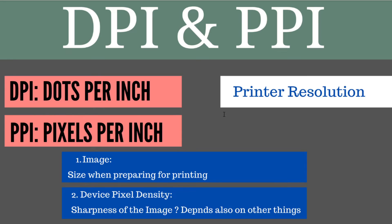In the next slide I will show you why this confusion exists, but first let's understand the two terms. Dots per inch, or DPI, are ink dots per inch that a printer can put on paper when printing an image — so this is printer resolution. When we use PPI for an image, it represents the size when preparing an image for printing, and this PPI becomes important. When we use PPI for a device, it represents the pixel density of the device, which determines how sharp a digital image will look — though this also depends on brightness and your eyes.